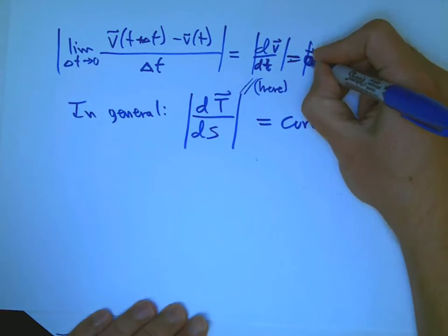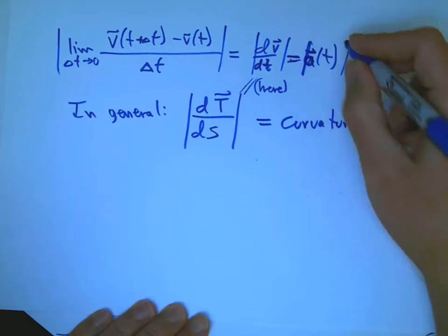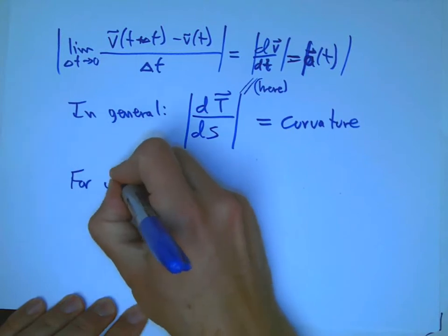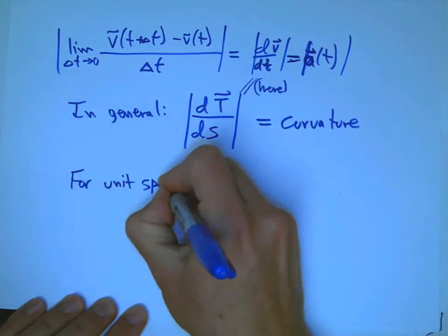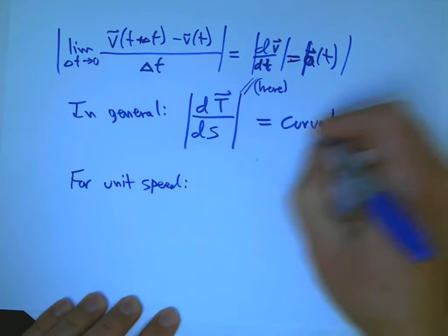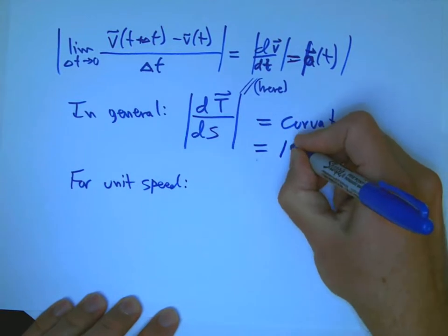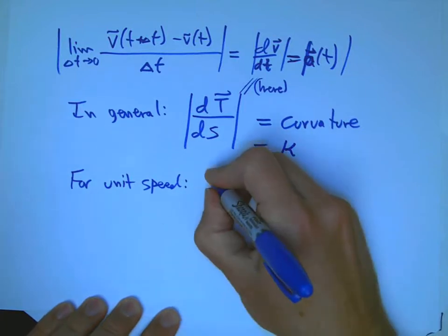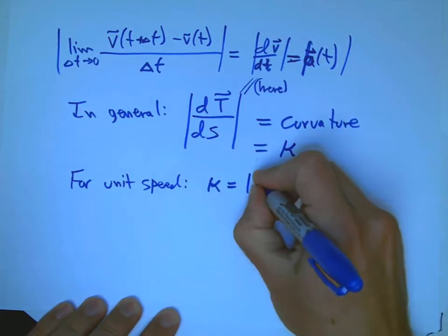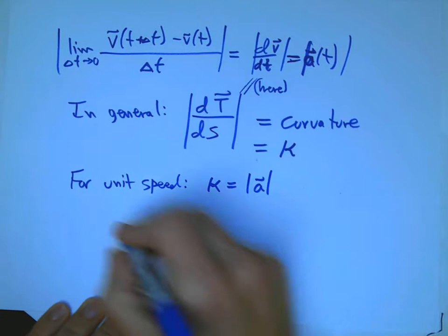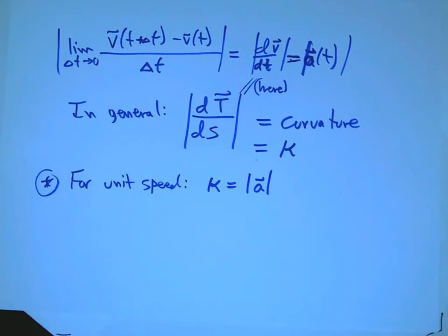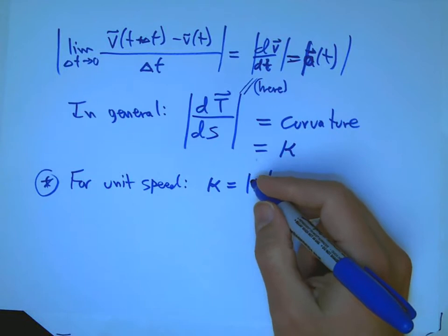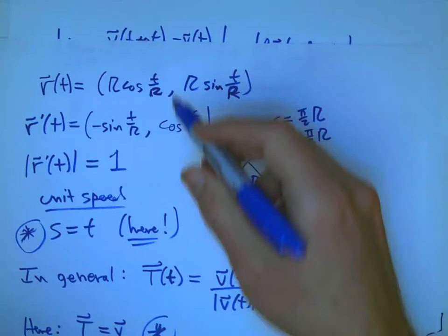For a given length you walk along the curve, how much does the direction change? And in this case of unit speed, so for unit speed and only for unit speed, then everybody uses kappa. It's a little Greek K. Kappa is just the magnitude of the acceleration. I'll put another star there, because that's this thing that's really nice and true here, but it's not true in general.